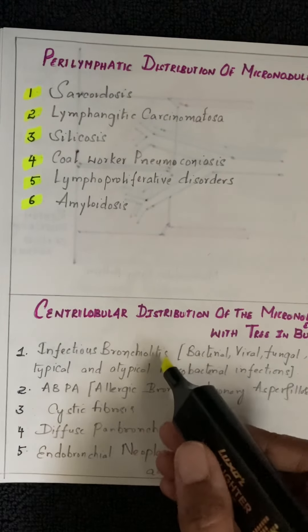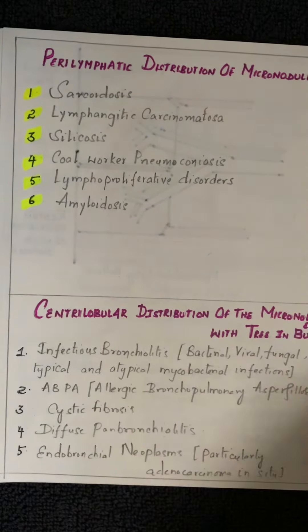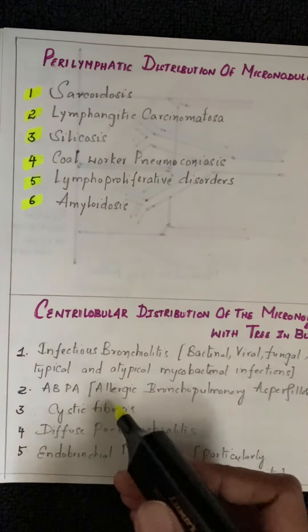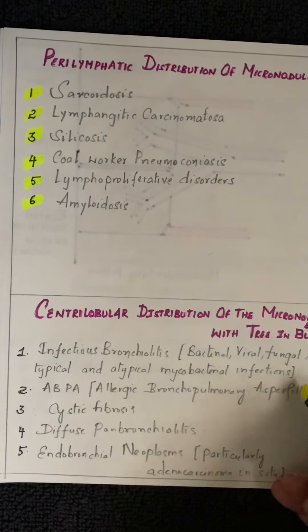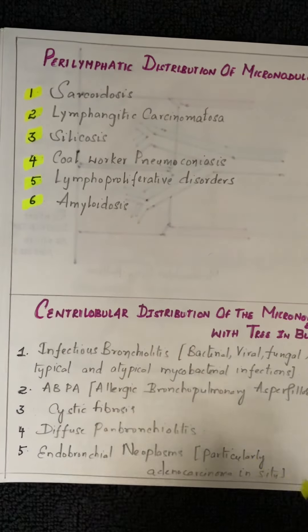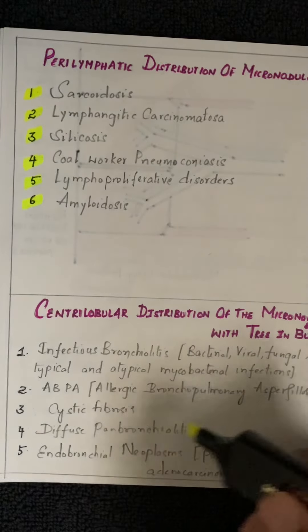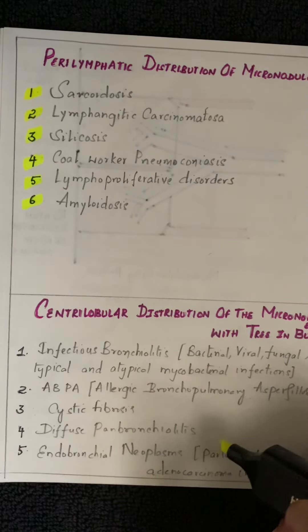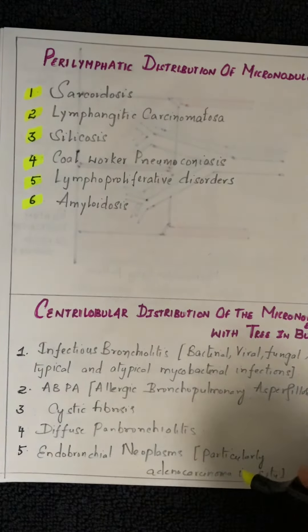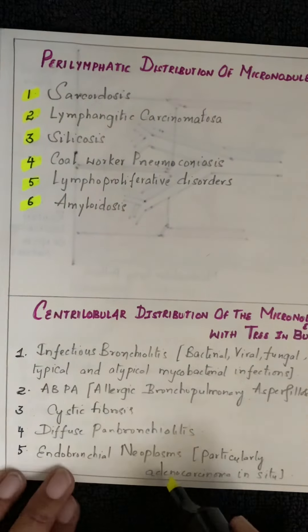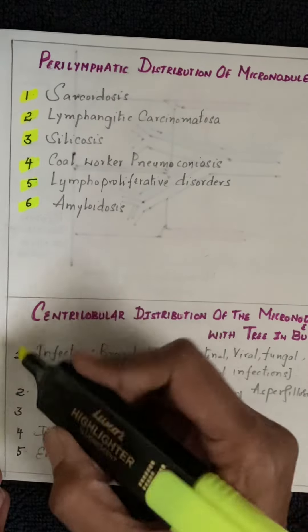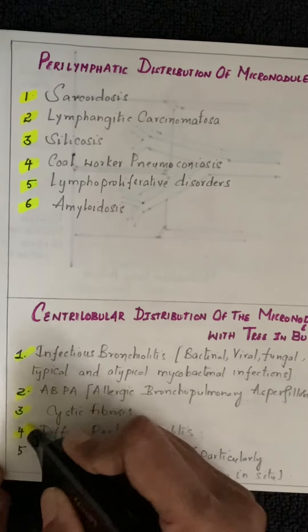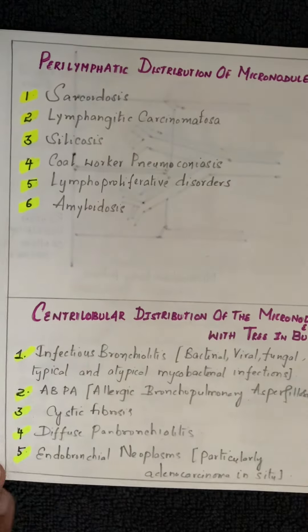For centrilobular pattern with tree-in-bud appearance, the differentials include infectious bronchiolitis (bacterial, viral, fungal, atypical, and non-tuberculous mycobacterial infections), allergic bronchopulmonary aspergillosis, cystic fibrosis, diffuse panbronchiolitis, and endobronchial neoplasm — particularly adenocarcinoma in situ.